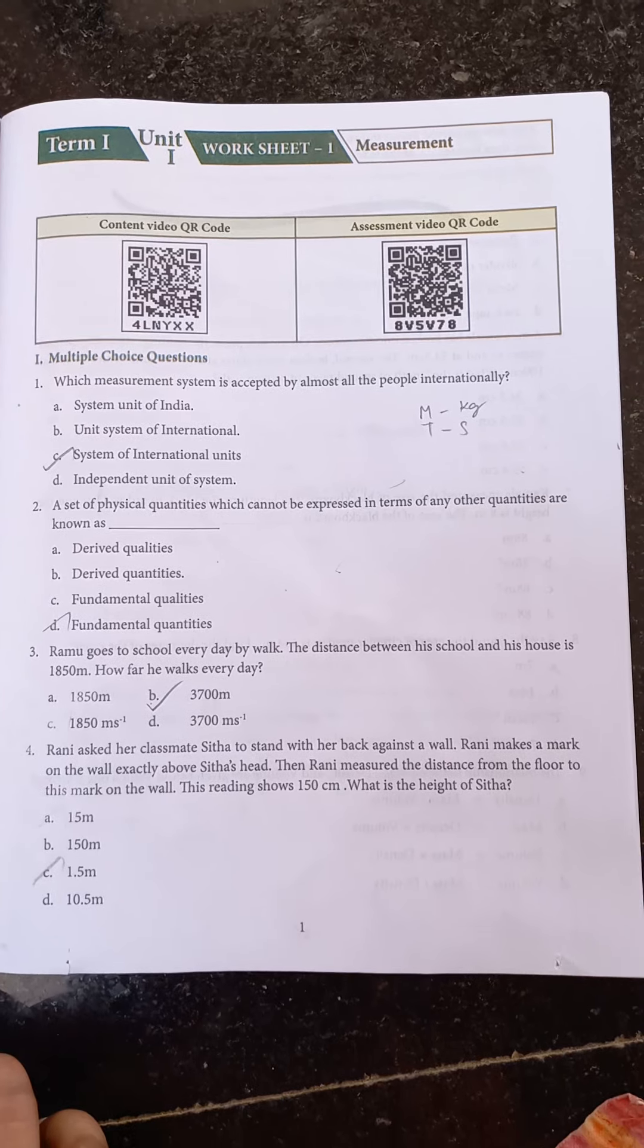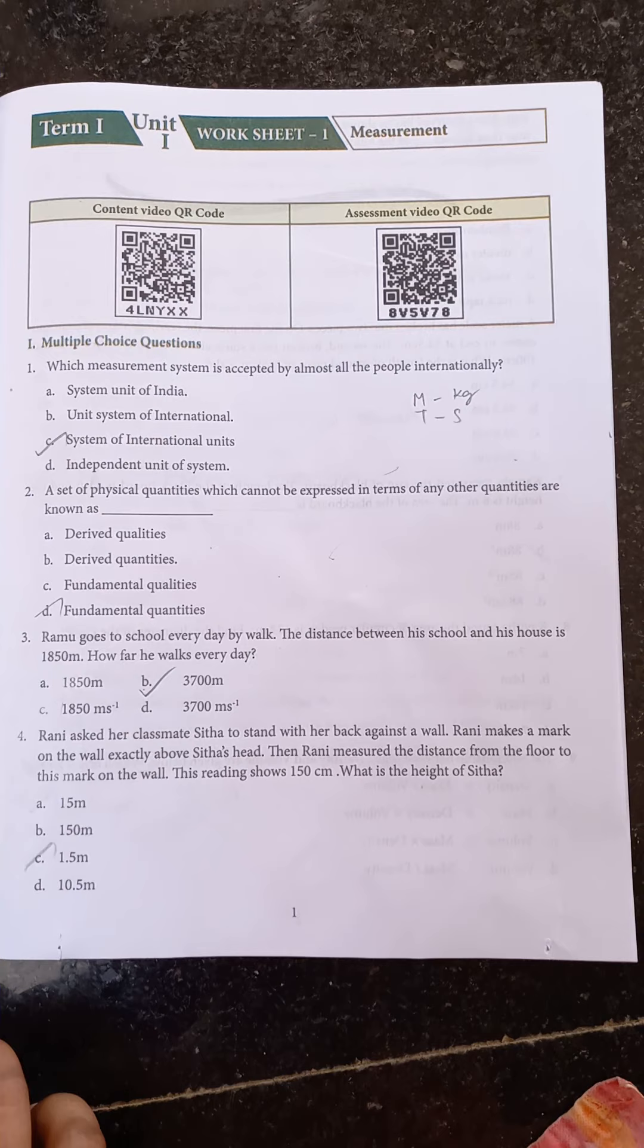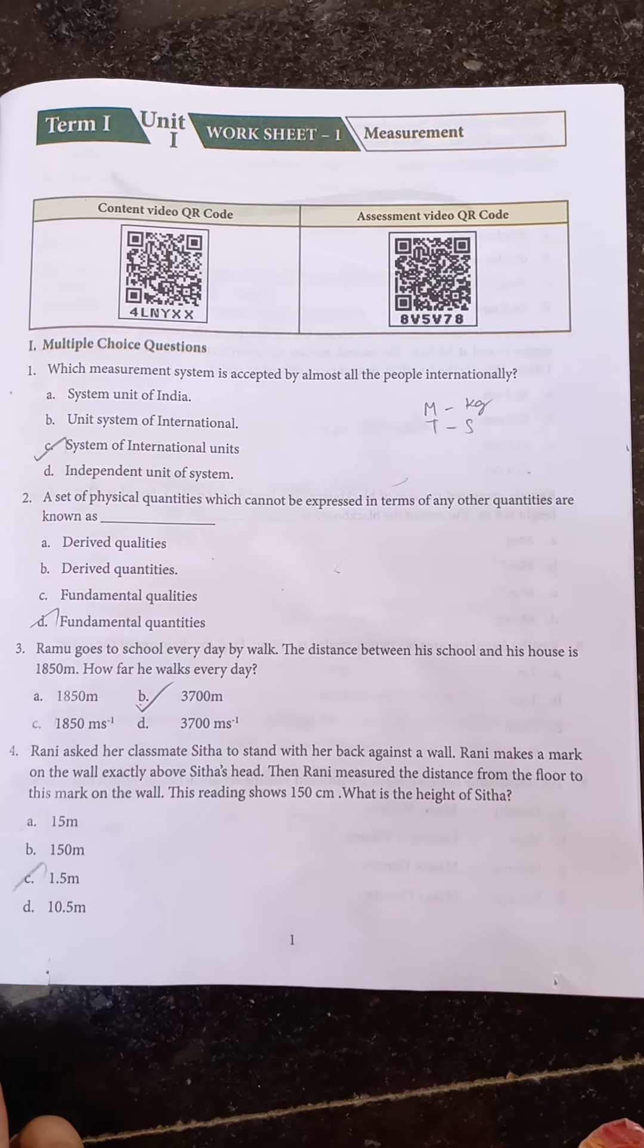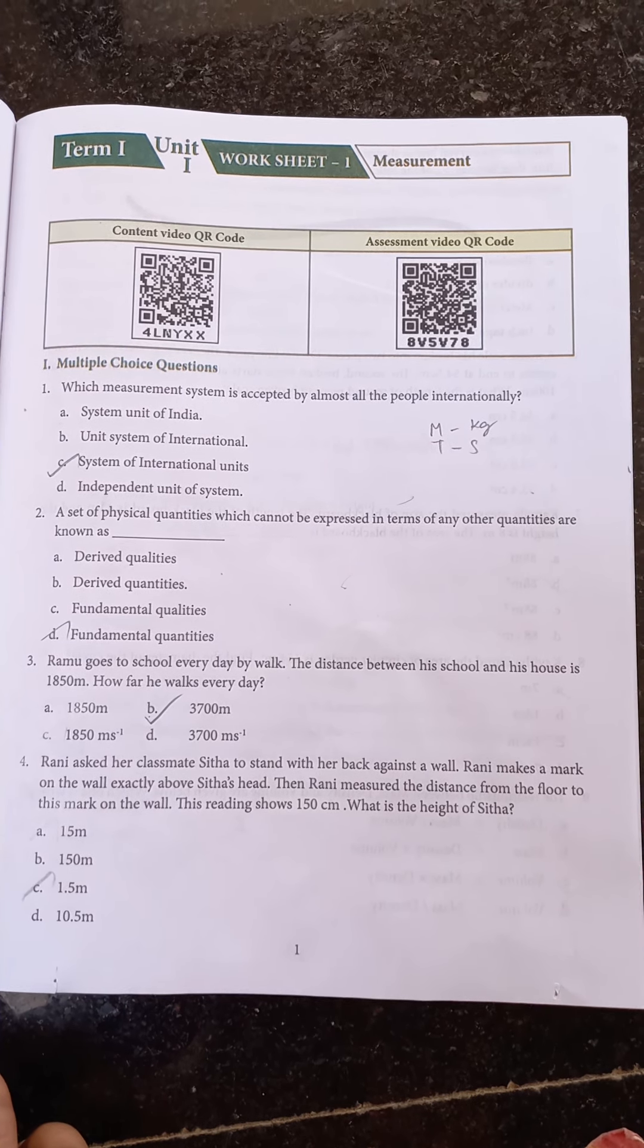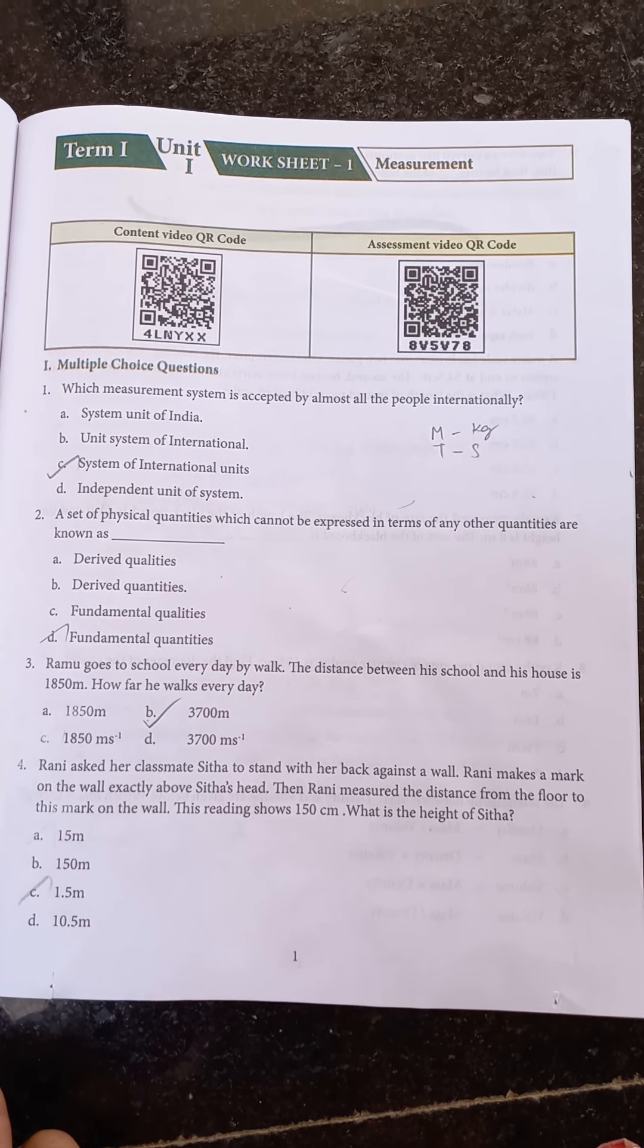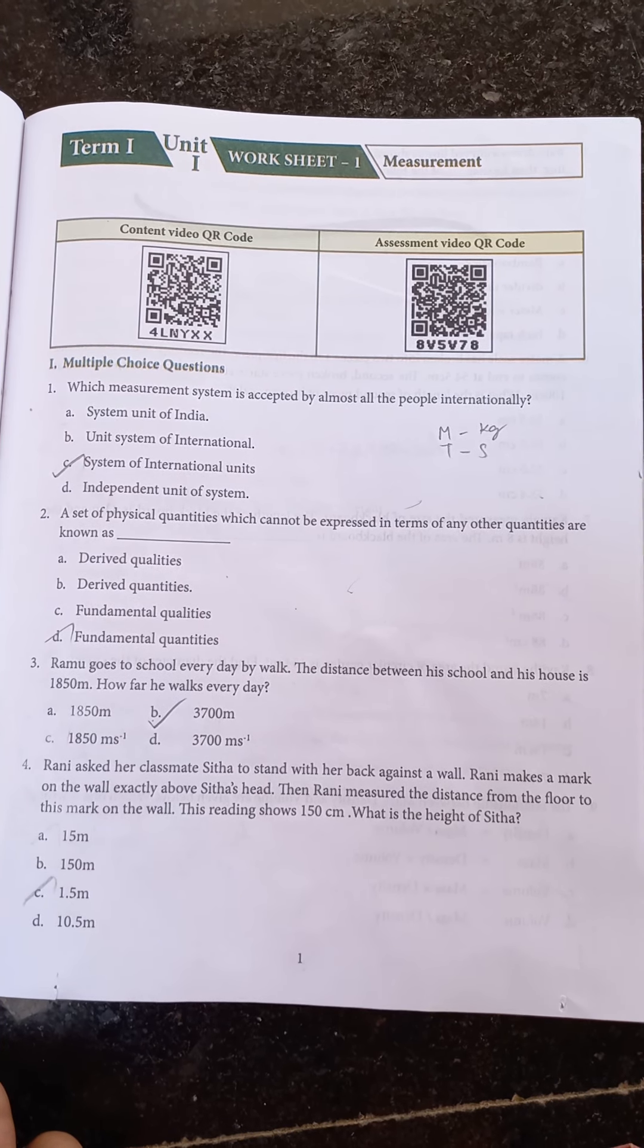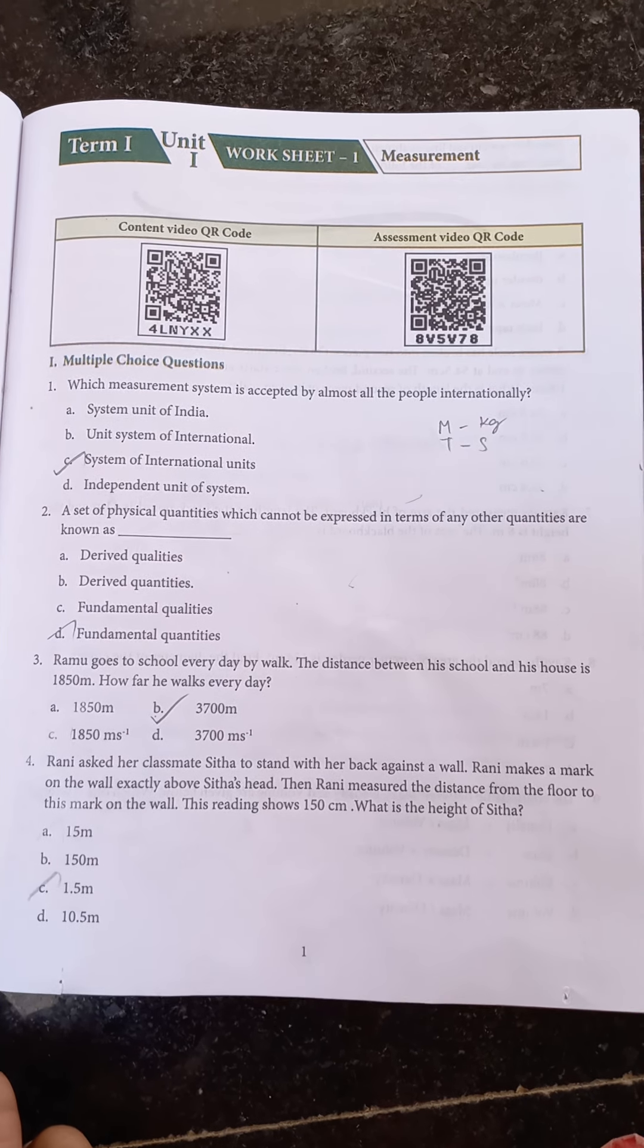Fourth question: Rani asked her classmate Sita to stand with her back against a wall. Rani makes a mark on the wall exactly above Sita's head, then Rani measured the distance from the floor to this mark on the wall. This reading shows 150 centimeters. What is the height of Sita?